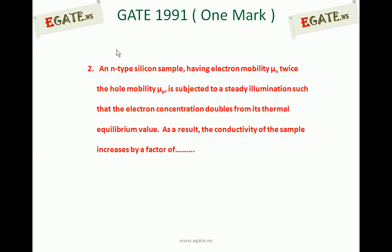The question is: an n-type silicon sample having electron mobility mu_n twice the hole mobility mu_p is subjected to a steady illumination such that the electron concentration doubles from its thermal equilibrium value. As a result, the conductivity of the sample increases by a factor of?